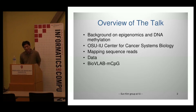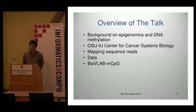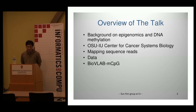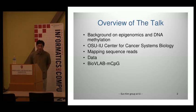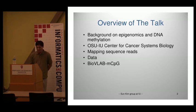I'm going to talk briefly about our Ohio State University / Indiana University Center for Cancer Systems Biology, and then how we map sequence reads from next-generation sequencing data. We'll also talk about our system called BioVirtual Lab, and for cancer it's MCPG — CPG is a cytosine where methylation occurs.